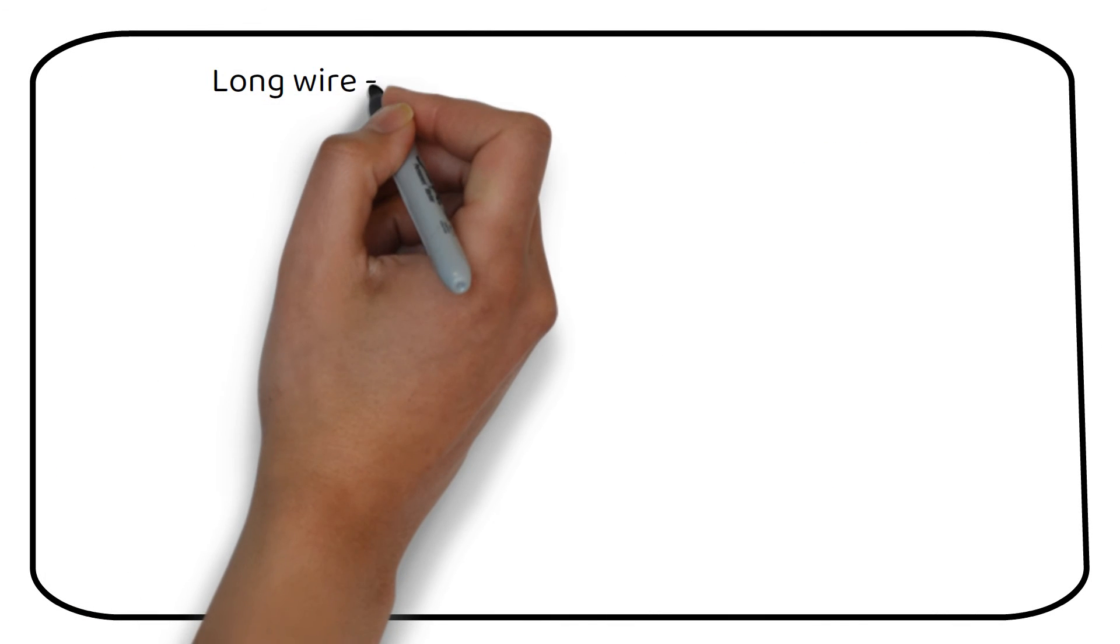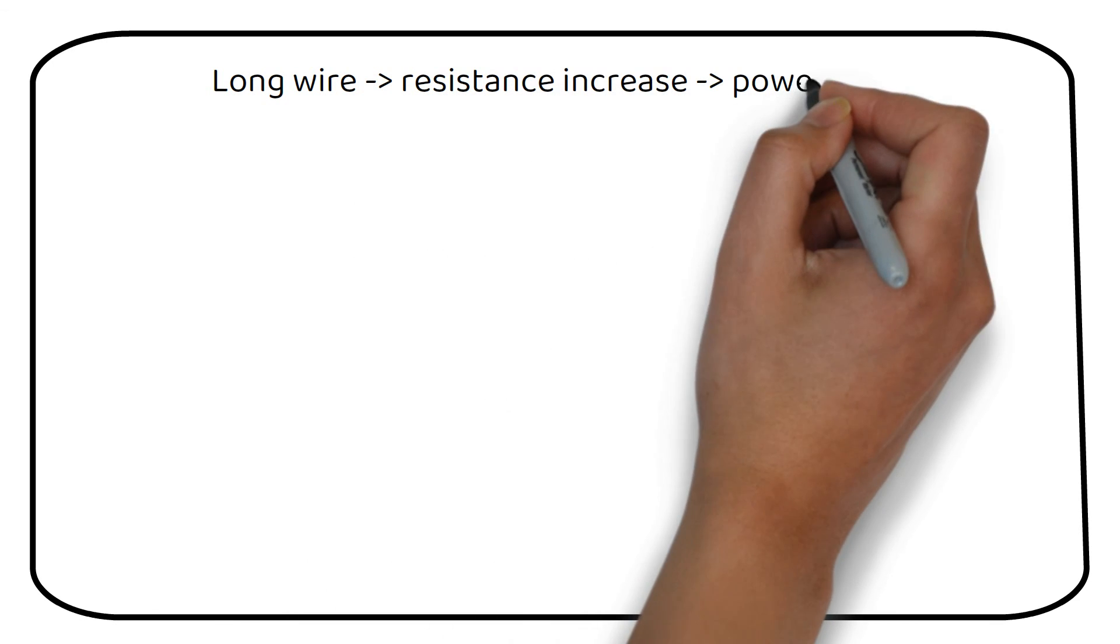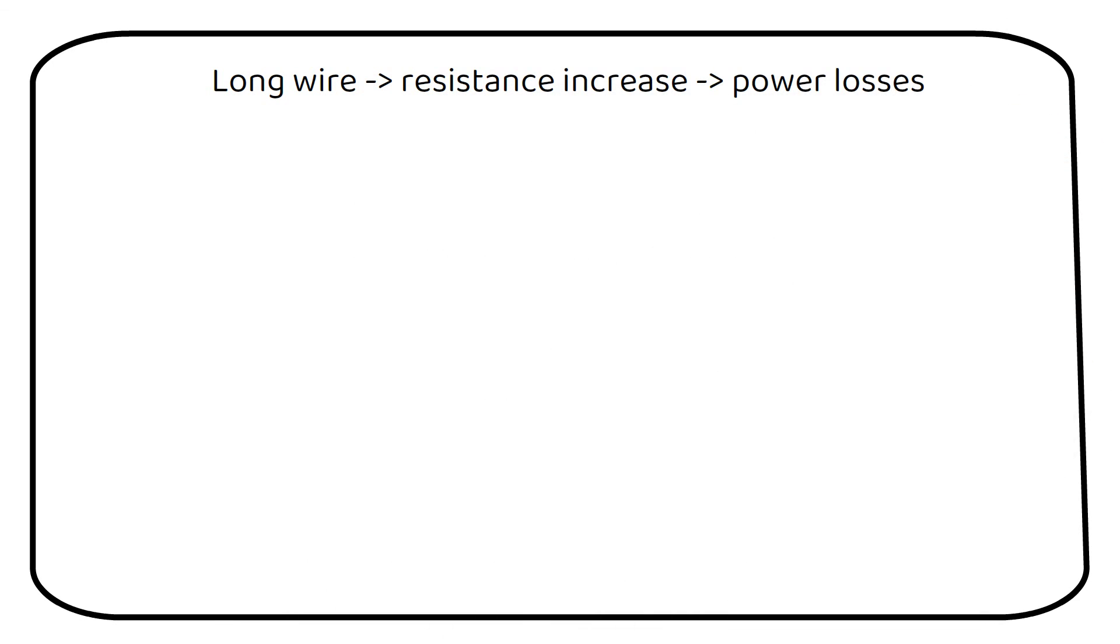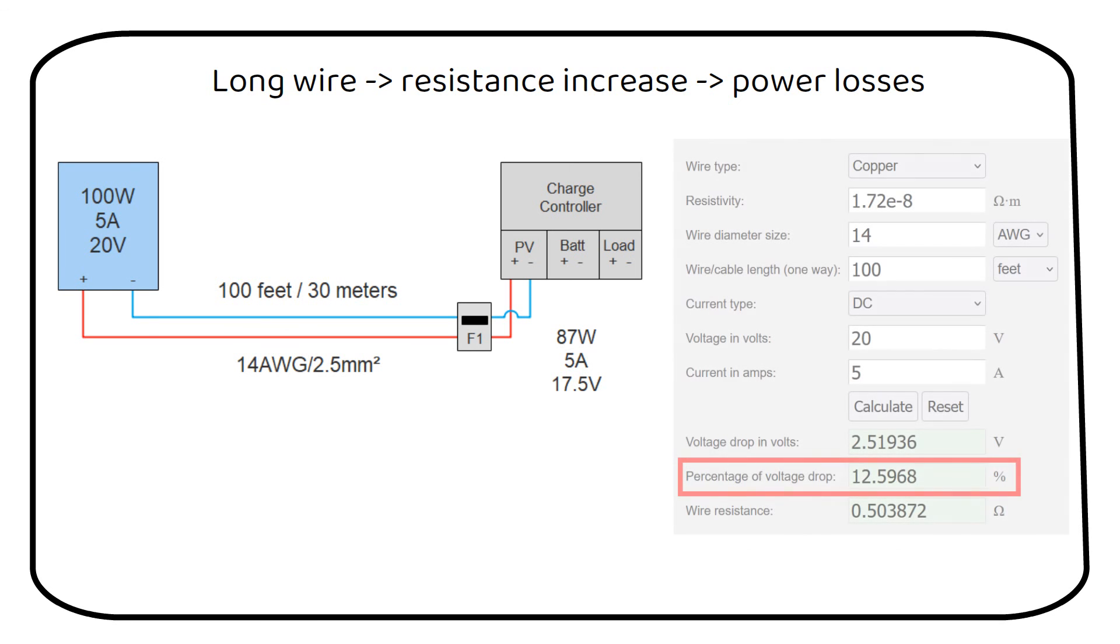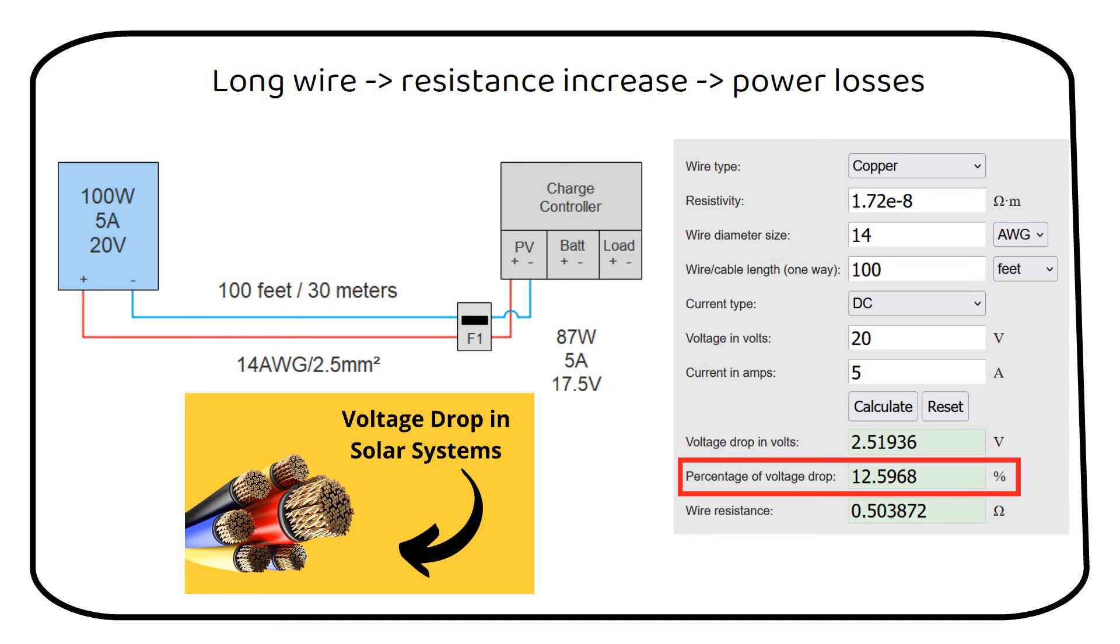With voltage drop we want to minimize the power losses in the wire. In order to do so, we must limit the resistance in the wire. We do this by increasing the thickness of the wire. For example, a solar panel is 100 watts at 5 amps and 20 volts at a distance of 100 feet or 30 meters to your charge controller with a 14 gauge or 2.5 millimeter square wire. The power at the solar panel is 100 watts, but the voltage after 100 feet of wire has now dropped by 2.5 volts, which is a voltage drop of 12%. This is a power loss of 13 watts. Use a voltage drop calculator in order to minimize the voltage drop at the end of the wire to 3%. I've made a whole video about it, so go check it out after this one.